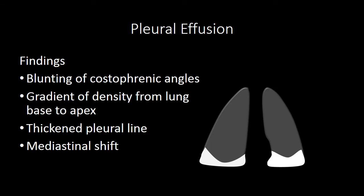When you think about the findings of a pleural effusion, you're going to want to look for blunting of the costophrenic angles on your radiographs. Sometimes if the person is in a supine position, you won't see that blunting quite as well, but you may see a gradient of density from the lung base to the apex, because the lung base, even in a person who's supine, is still dependent compared to the lung apex.